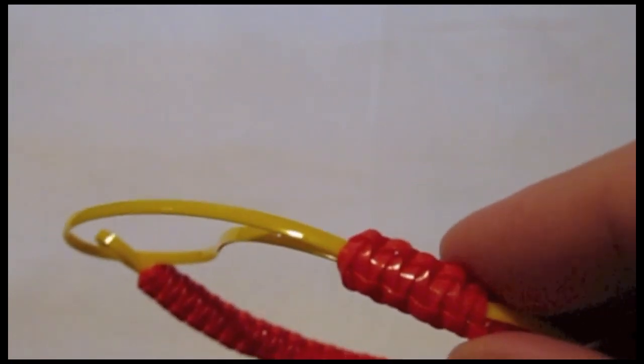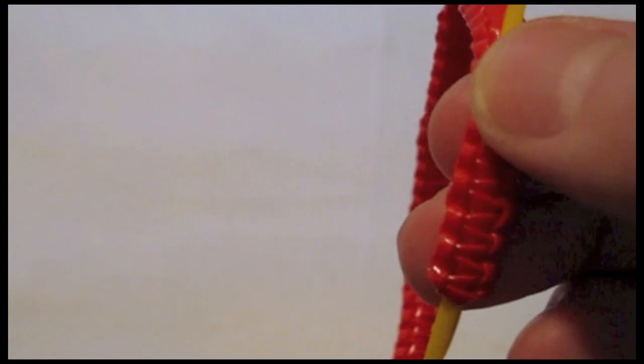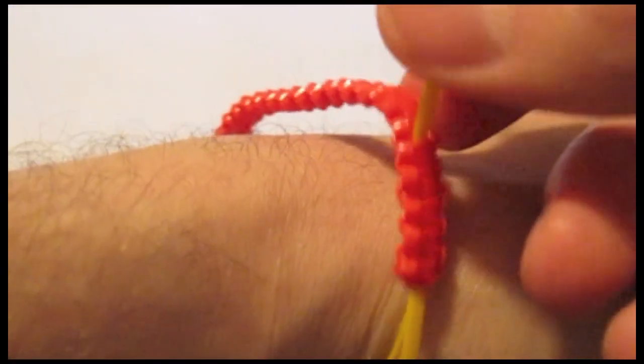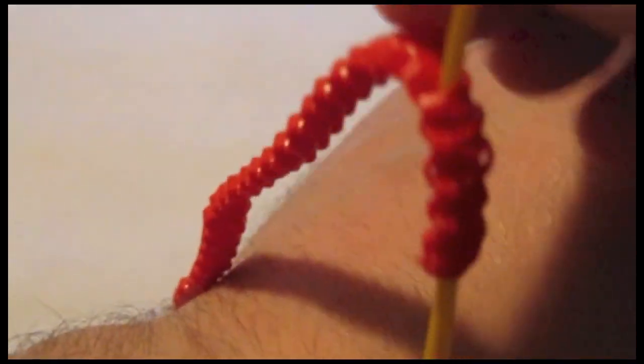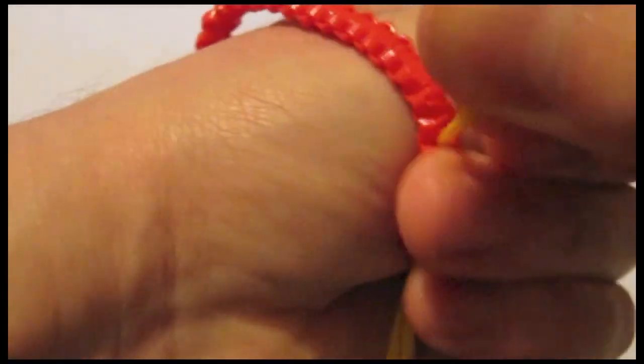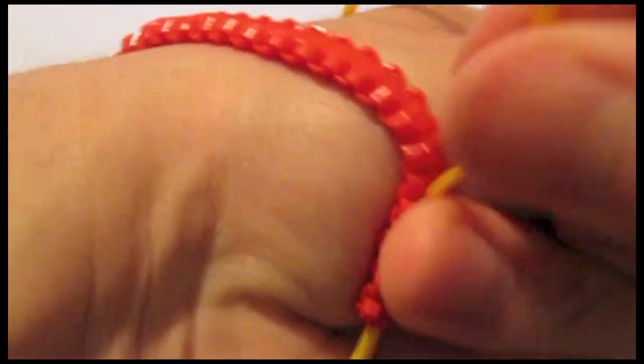Take the lanyard, place it over your wrist, and pull on the short strand. This will tighten the lanyard to fit tightly around your wrist.